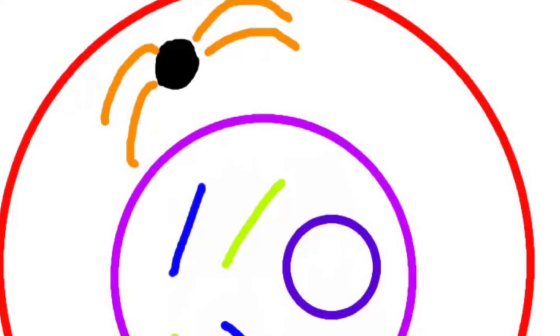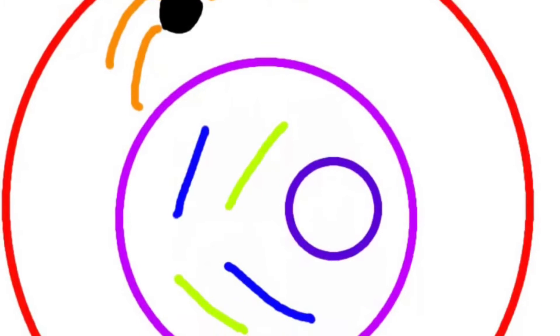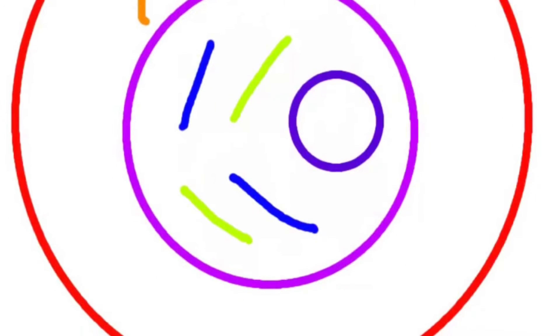Beginning meiosis, DNA strands thicken into chromosomes. Homologous chromosomes begin to approach each other.